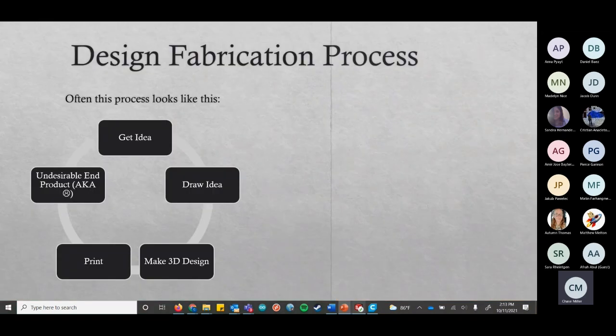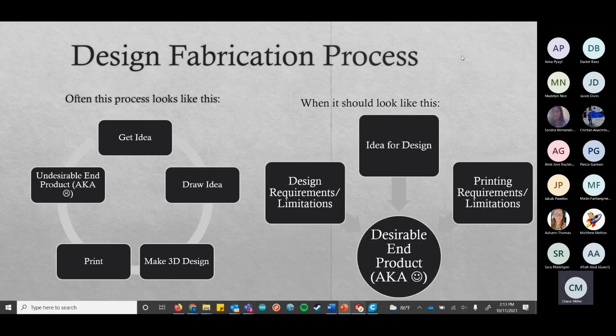The design fabrication process often has a tendency to look like this: you get a great idea, you draw the idea, you make a 3D design, you print it, and then it doesn't work. When it really should look like this: you look at all of your design limitations and requirements, take your idea for the design and look at the limitations of what your printer can do. Then you get a nice product at the end that you don't have to iterate over like 12 different prototypes, which always costs less money.